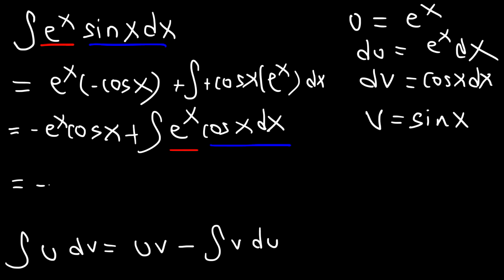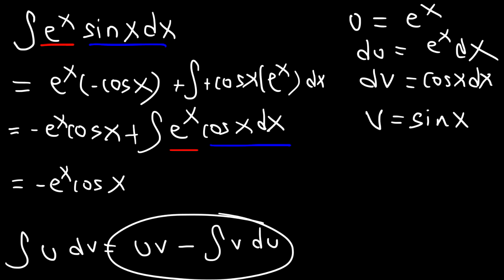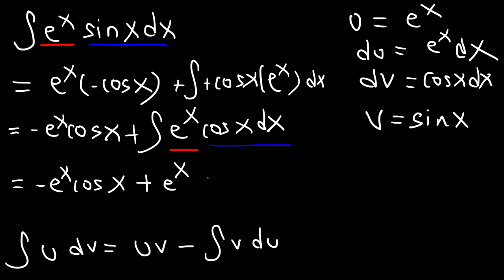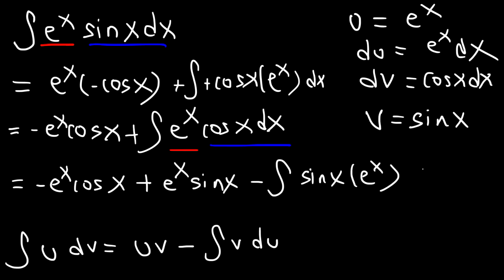So we have negative e to the x cosine x, and then applying the formula again for u times v, that's plus e to the x sine x, minus the integral of v du, which is sine x times e to the x dx.